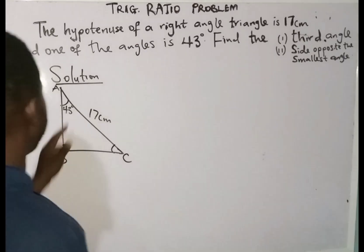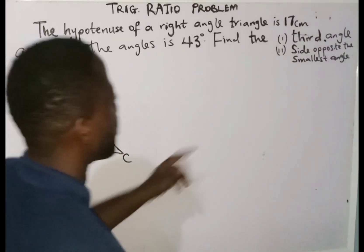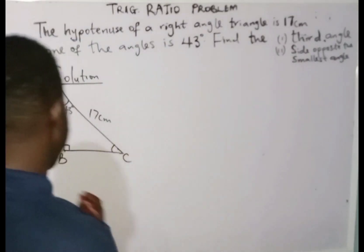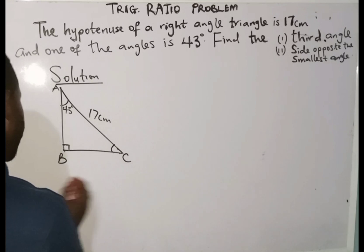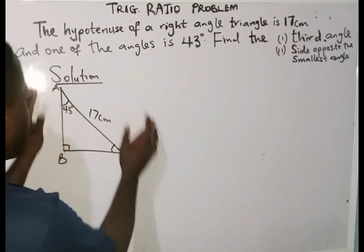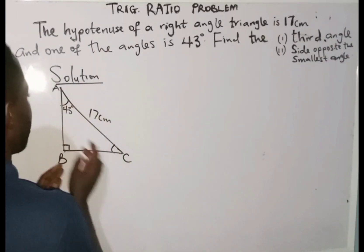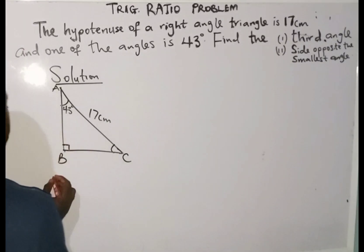This is the 90 degrees, 43 degrees, and this is angle C. In order to get the third angle, which is angle C, I'm now going to say: since sum of angles in the triangle is equal to 180 degrees, that means I'm going to have all these angles together, and it's going to be equal to 180 degrees.